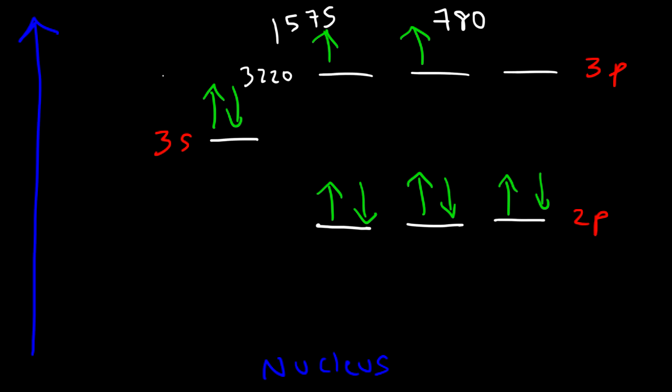Now let's work on some examples. Which atom or ion has the largest ionization energy — magnesium or calcium? Magnesium is above calcium in the alkaline earth metals group, and ionization energy increases as you go up. Therefore magnesium should have the higher ionization energy. Indeed, magnesium is 735 and calcium is 590 kilojoules per mole — magnesium wins.